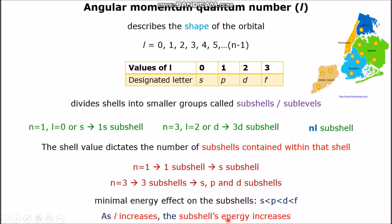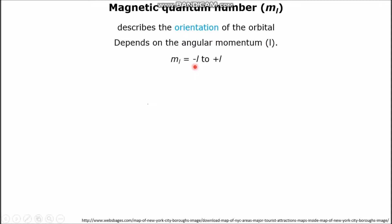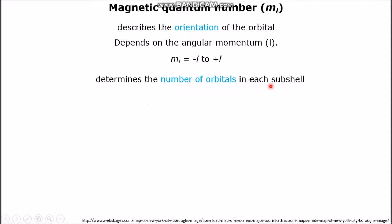Let's talk about the third quantum number, the magnetic quantum number, written in short as ML. ML specifies the orientation of the orbital. It is dependent on the angular momentum L. Values of ML range from negative L to positive L, including zero. ML is a determinant of the number of orbitals in each sub-shell for a given value of L.